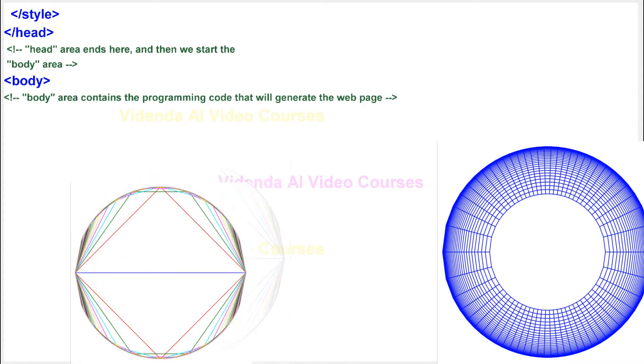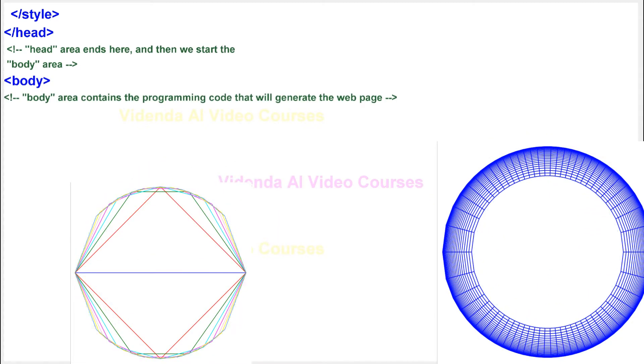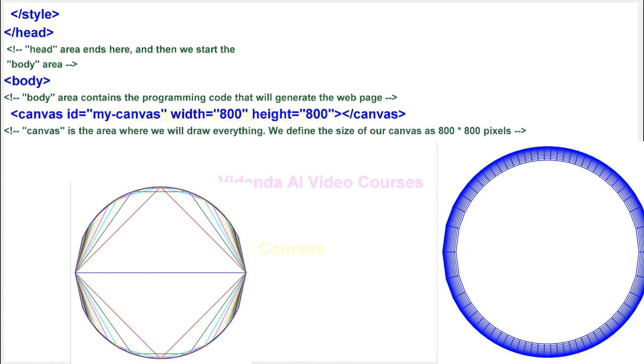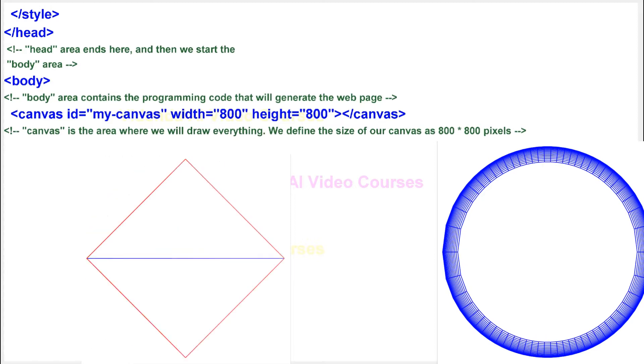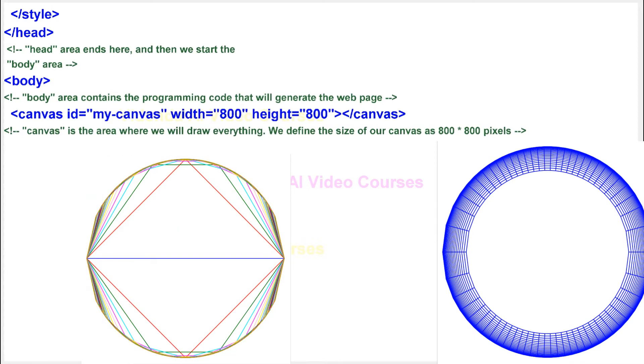Body area contains the programming code that will generate the web page. Canvas is the area where we will draw everything. We define the size of our canvas as 800 asterisk 800 pixels.